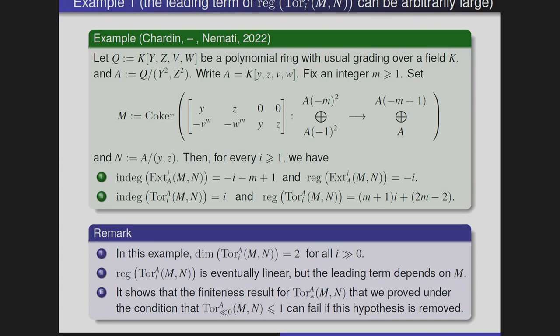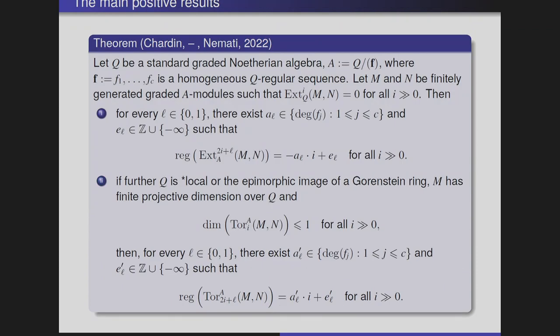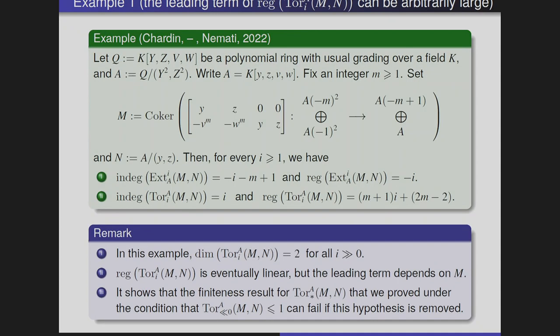We have some examples. In this theorem, the leading coefficient actually depends on the base ring but not on the module, so there are finitely many choices. But if we remove this condition, the next example shows the theorem no longer holds true. We consider a graded complete intersection ring of codimension 2, where the module M is the cokernel of a certain map and N is the ring modulo (y, z). Then we can see that the regularity of the i-th Tor is given by a linear function, but the leading coefficient can be arbitrarily large depending on the module M. Also, we can see that in this case the dimension of i-th Tor is 2 asymptotically.